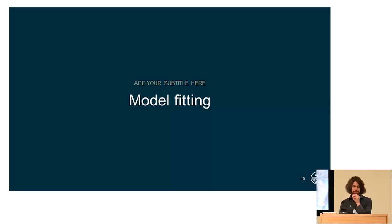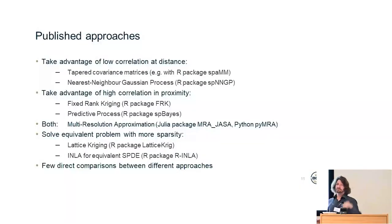So that's variogram calculation and neighborhood identification. What about fitting the model? Well, lots of libraries exist for this open source, and they use one of two approaches related to the sampling. So either you have low correlation at a distance, and so you can take advantage of that by tapering your covariance matrices, or even by considering only the nearest neighbors of points and calculating this statistical model and updating your Bayesian prior.